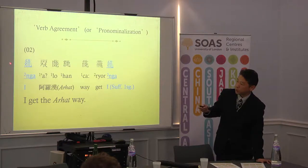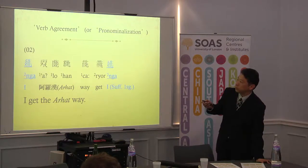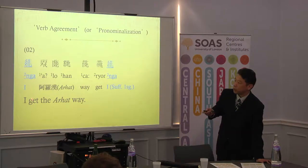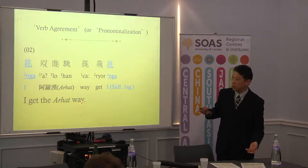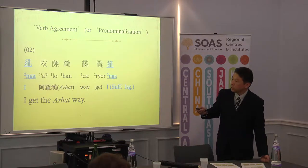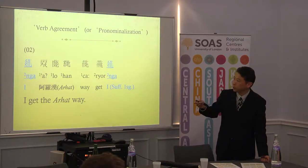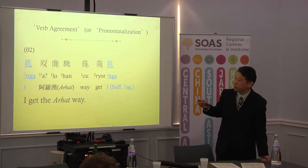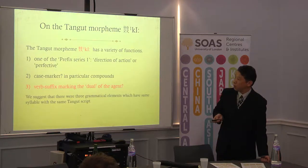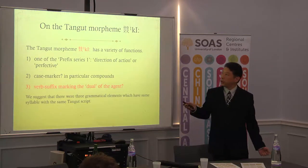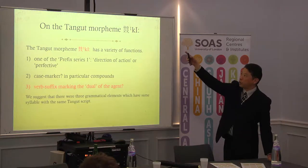For example, the first character is the topic of the sentence and the last character is the same sound. That means 'I get a lot of the way.' And in this sentence, this kind of agreement — between the independent form and the suffix form. So we return to this Tangut morpheme qi.